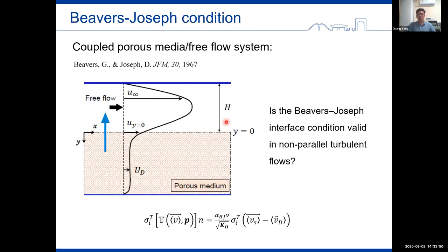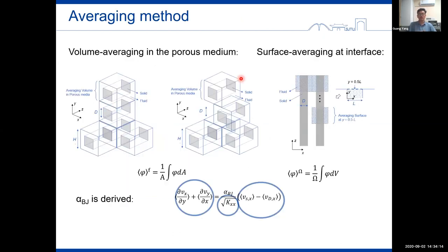We used also the pore-scale numerical data to validate the REV-scale interface conditions. Here we choose the widely used Beavers-Joseph condition. We want to check if this interface condition is valid in non-parallel turbulent flows or not. And keeping this aim in mind, the pore-scale data has been scaled up. And the figures here illustrate the averaging volumes and also the averaging surfaces as the coupled interface. As in this equation, the alpha value is the most important factor. We calculated the alpha inversely using the averaged velocity and the averaged velocity gradients.